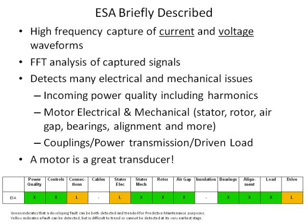This chart illustrates the various parts of a motor system and the analysis capability of electrical signature analysis. Green indicates that a developing fault can be both detected and trended for predictive maintenance purposes. Yellow indicates a fault can be detected but may be difficult to trend or cannot be detected at its earliest stage.